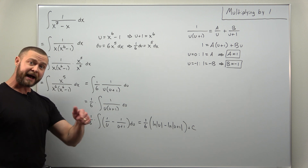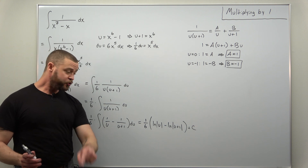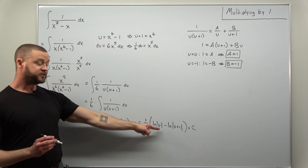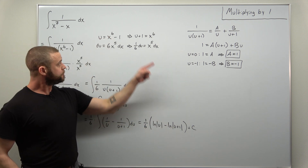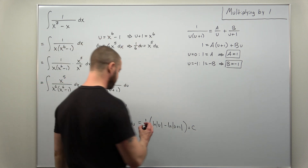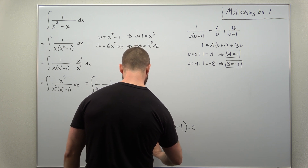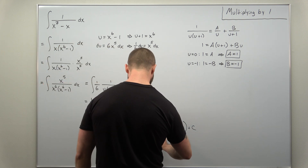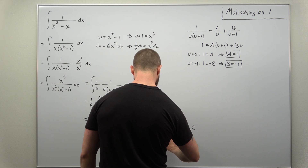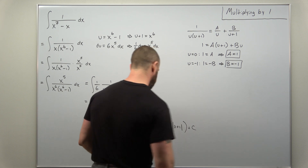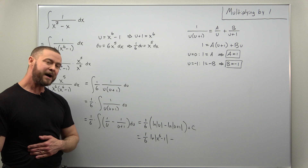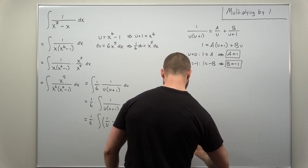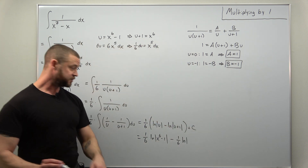The only thing we need to do now is back-substitute. Our substitutions were: u equals x⁶ minus one, and u plus one equals x⁶. Going ahead and plugging that in, distributing the 1/6, we get: natural log of (x⁶ minus one) minus natural log of x⁶.